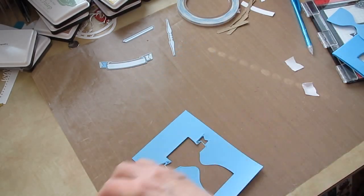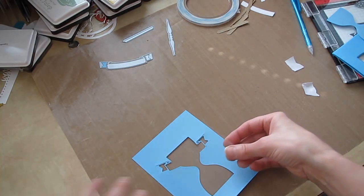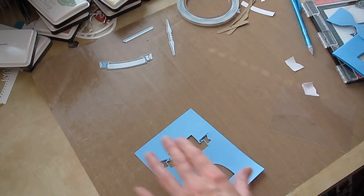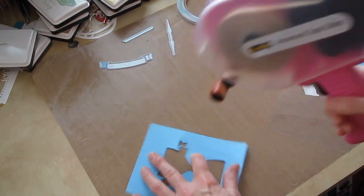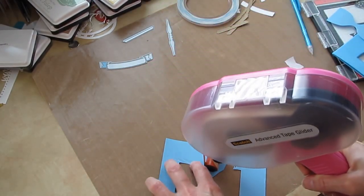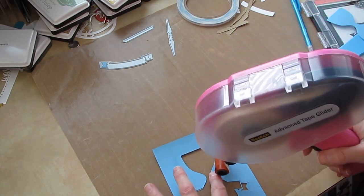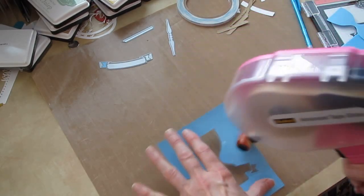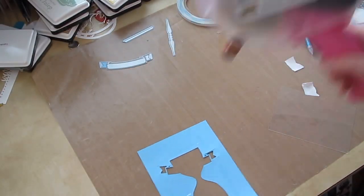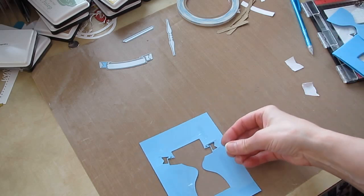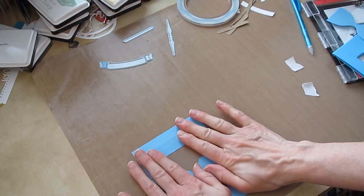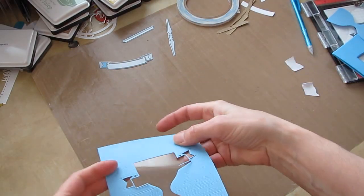So now we need acetate on the back of there. I have a piece of that cut just to cover the hourglass. Put some tape around there. Sticky stuff. And really, it wouldn't matter on this. I'm doing it kind of tight because I didn't make the acetate huge. Get that taped on there.